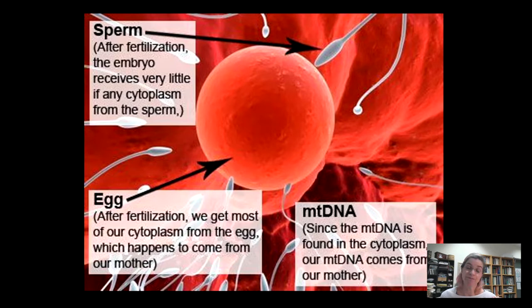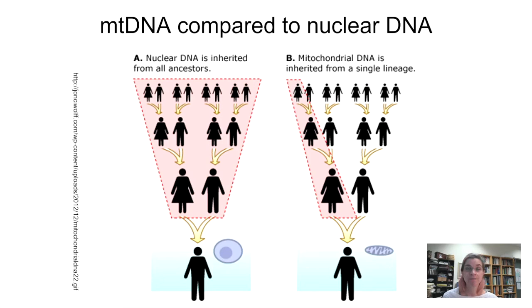Think about the egg cell — it's much larger than the sperm because the egg cell provides the cellular machinery needed to make a person. The sperm brings only the second half of the nuclear genome. This means that mitochondrial DNA is passed from mother to child, mother to child, mother to child. Men have mitochondrial DNA, but they don't pass it on to their children.